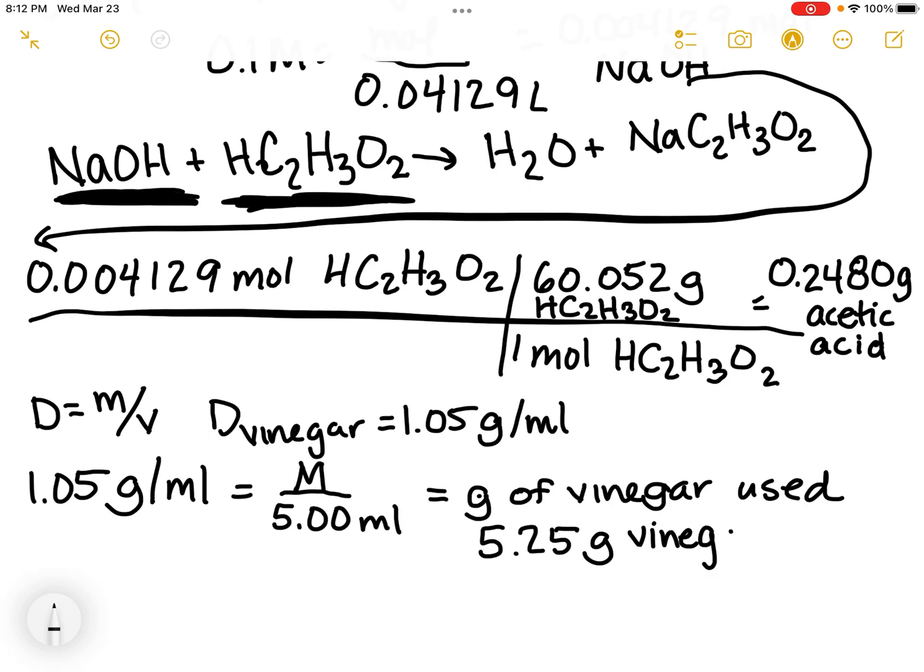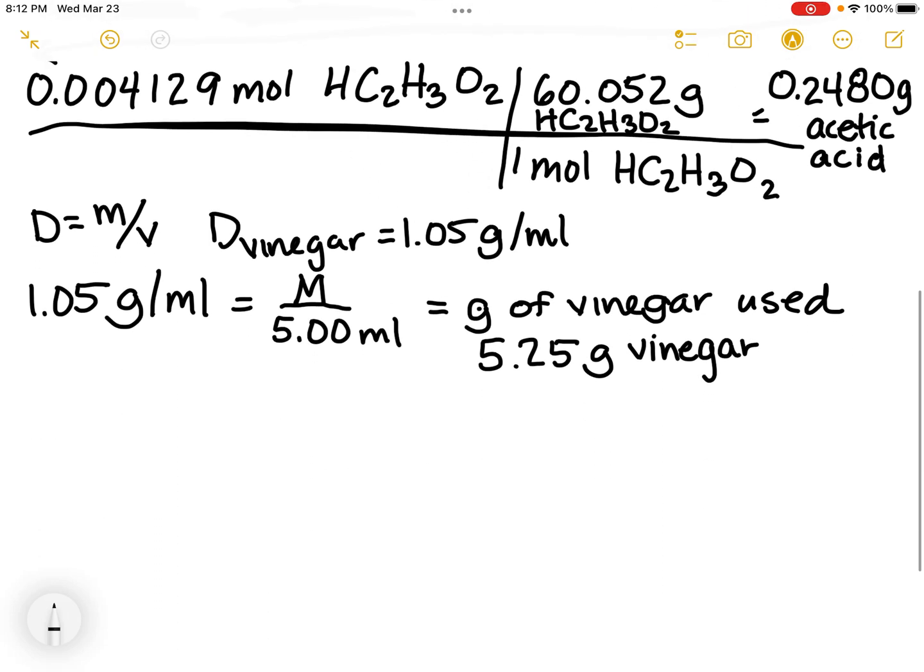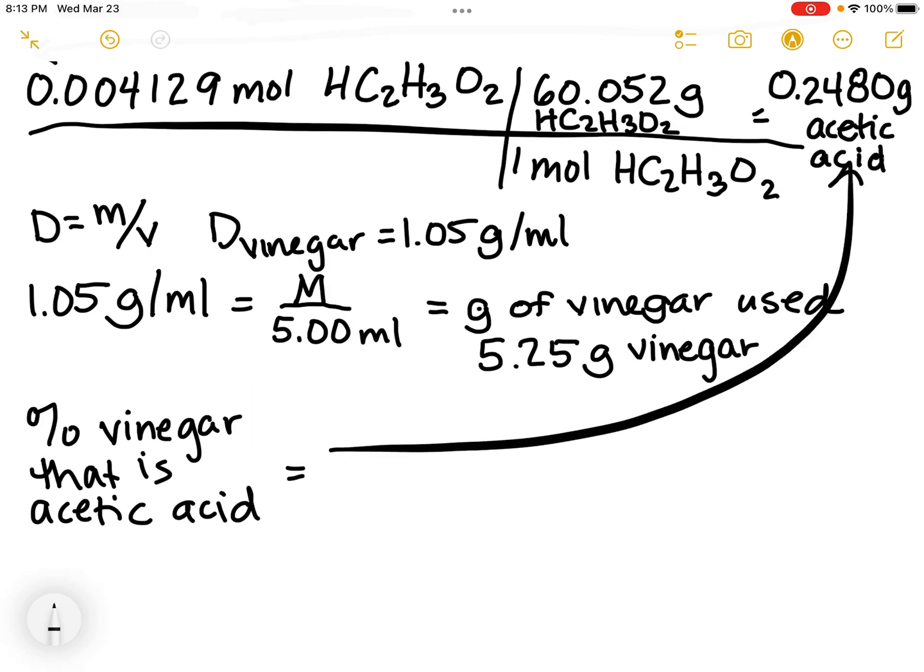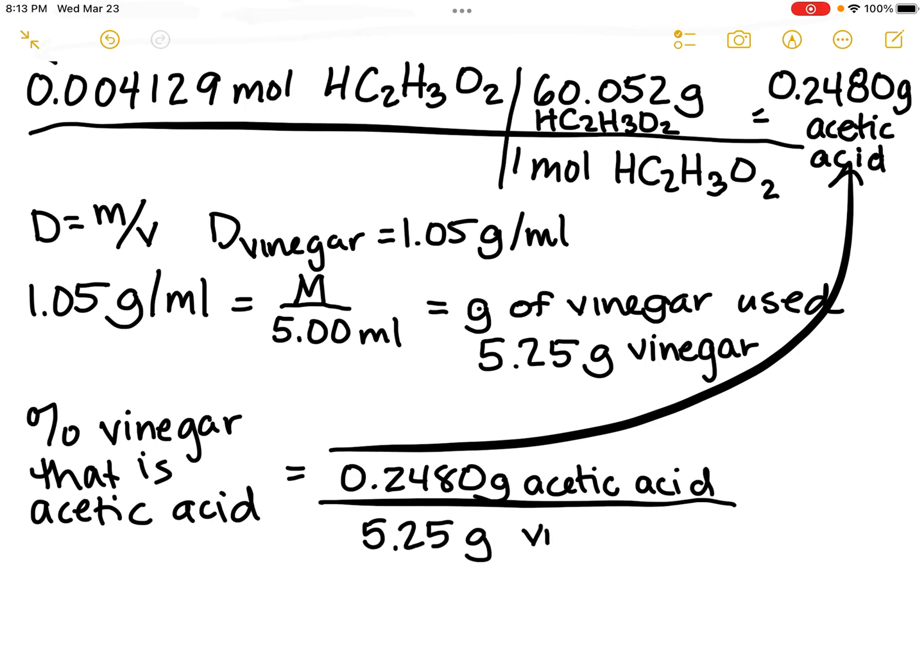In 5.25 grams of vinegar, I had 0.2480 grams of acetic acid. My percentage of vinegar that is acetic acid is 0.2480 grams over 5.25 grams of vinegar.